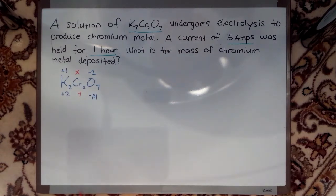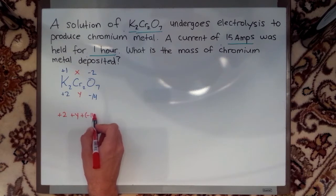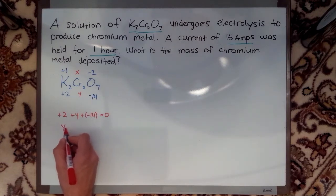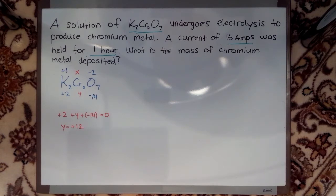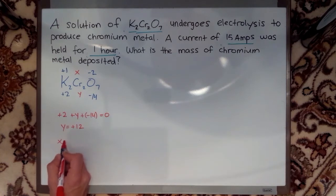So that means that plus two plus my Y plus my negative fourteen has to equal zero. That's my total charge. If I rearrange that, Y gives me plus twelve. The individual charge on one chromium atom then, because I have two of them, is X, which is just equal to Y over two, and that's going to give me plus six.